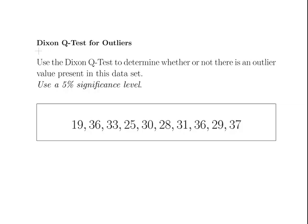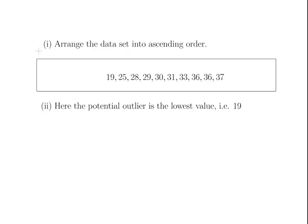In this video we are going to look at the Dixon Q-Test and use it to determine whether or not there is an outlier present in a dataset. We are going to use a 5% level of significance.